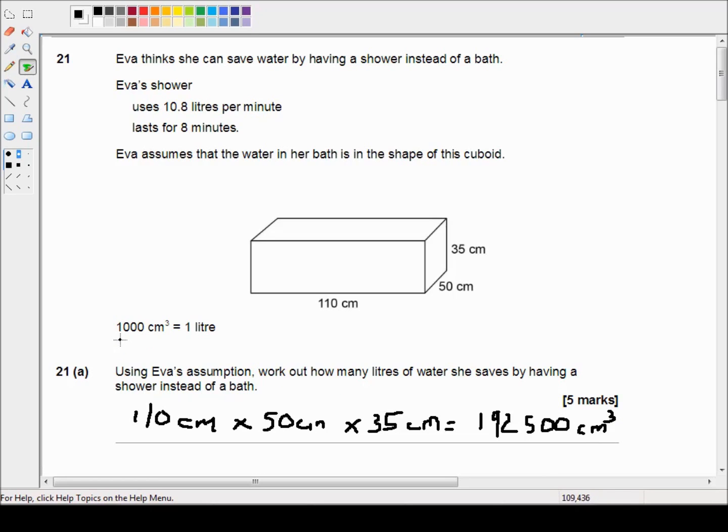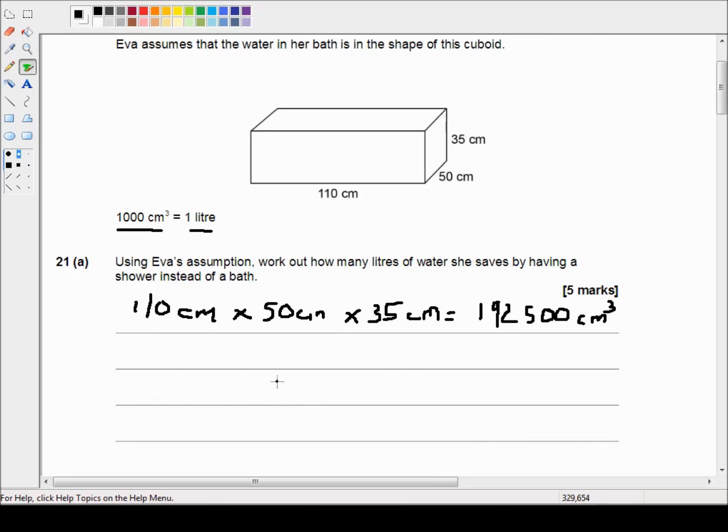Now we're told that 1000 centimeters cubed is equal to 1 liter, so all we have to do is divide 192,500 centimeters cubed by 1,000. We can use a calculator if we're not confident, but all we have to do is move the decimal point three places to the left: that's one, two, three. So that's 192.5 liters.